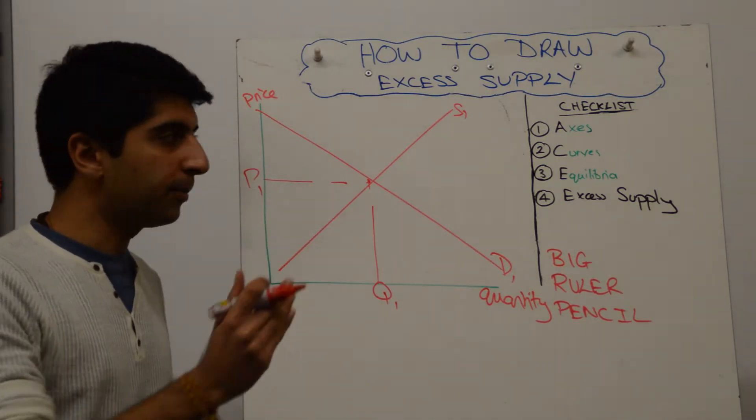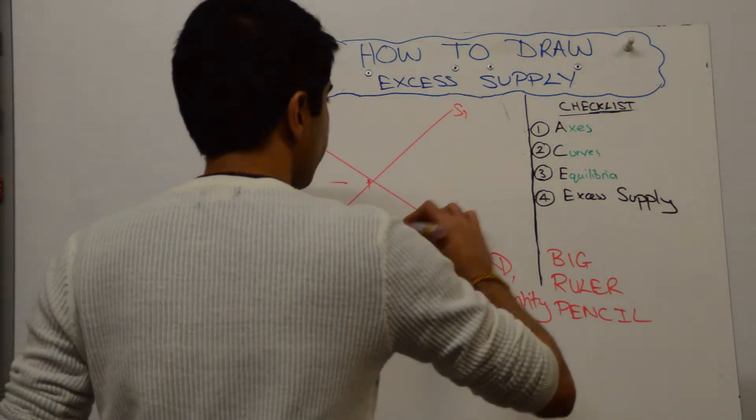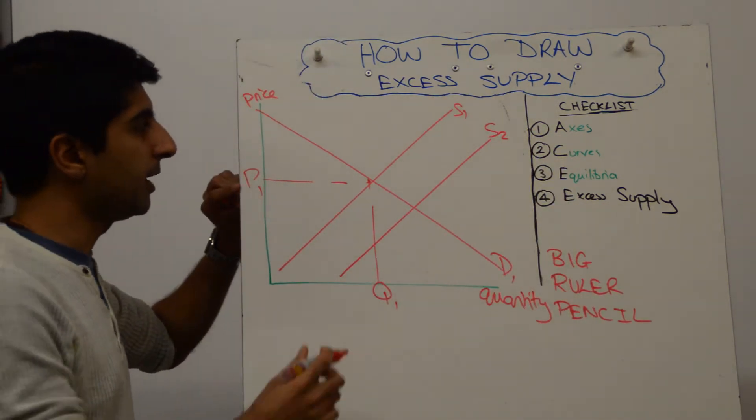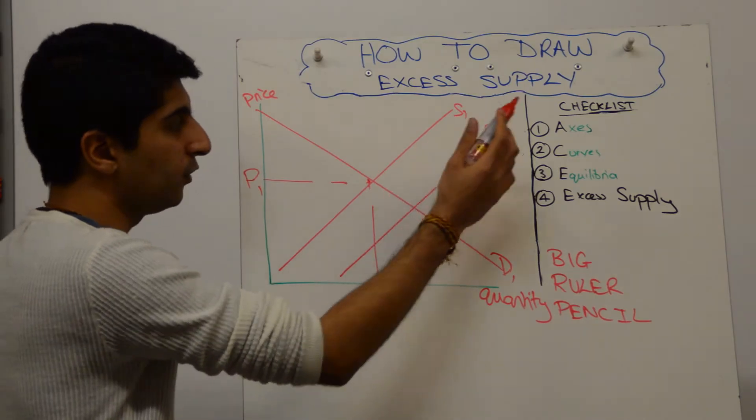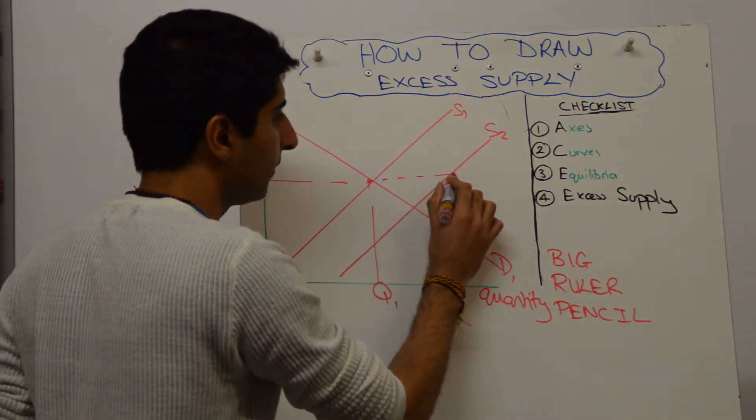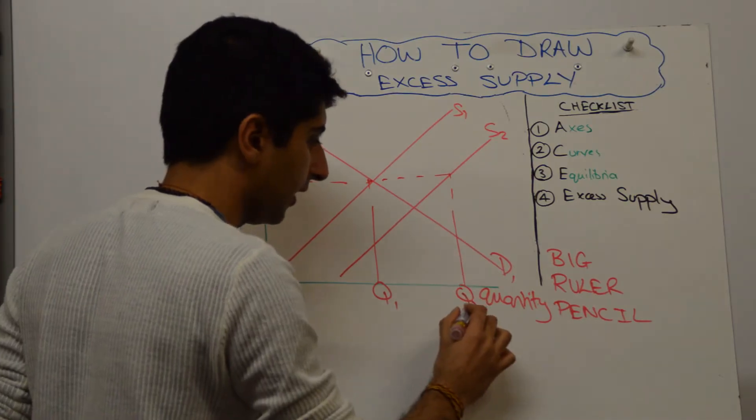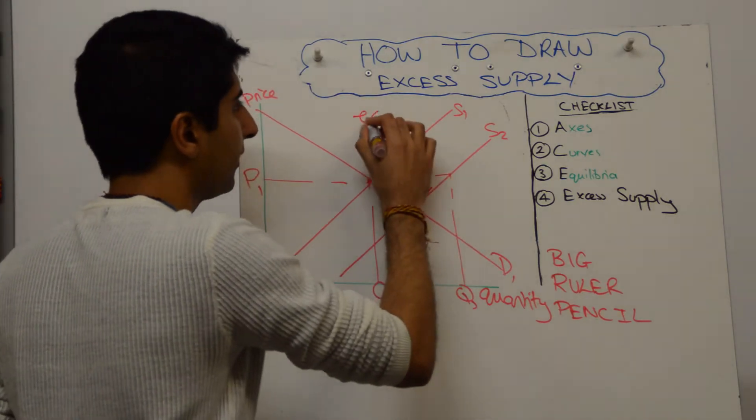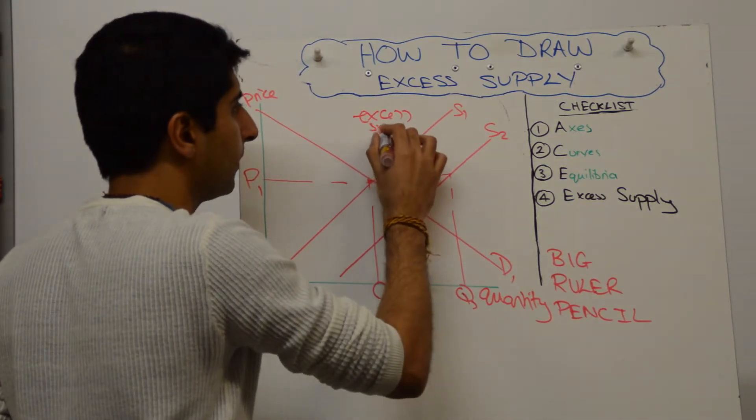One way of doing this is by shifting supply to the right. Remember, initially the price stays the same at P1. So now with this new supply, at P1, demand remains at Q1, but supply is now here at Qs. So what you can do is shade in this little triangle here and label that excess supply.